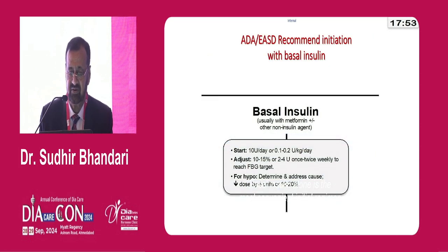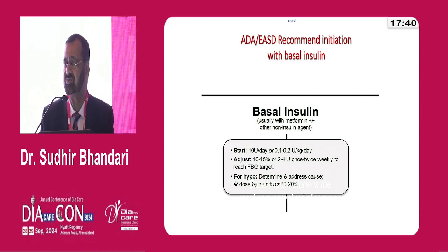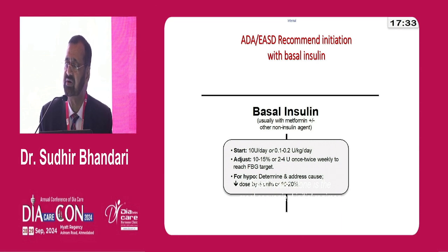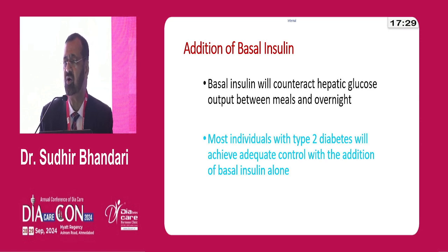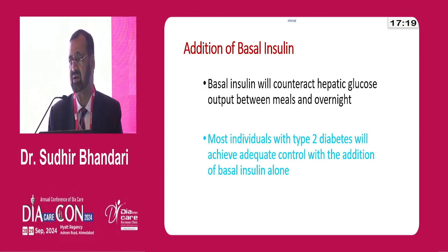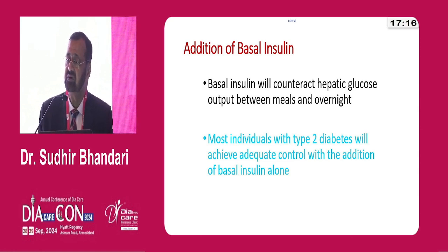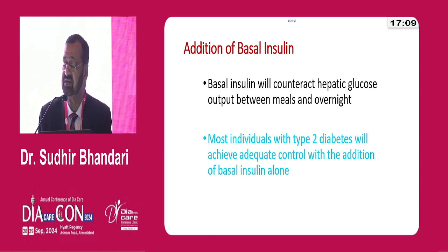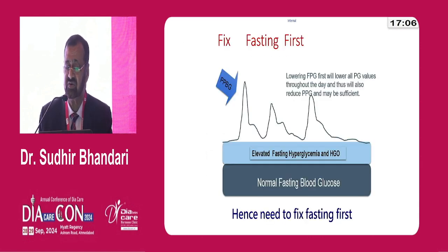Basal insulin needs to be started at optimal doses. You could start with 0.1 to 0.2 units per kilogram per day, then build it up gradually every third or fourth day to optimize insulinization. There are two components of insulin therapy: starting the right basal insulin and optimizing the doses. Basal insulin will counteract hepatic gluconeogenesis between meals, which is responsible for early morning hyperglycemia. Most individuals with type 2 diabetes will achieve adequate control with basal insulin addition.